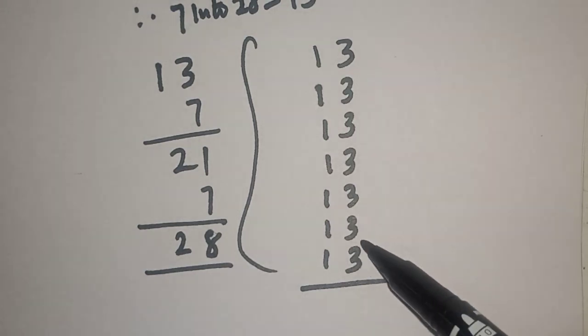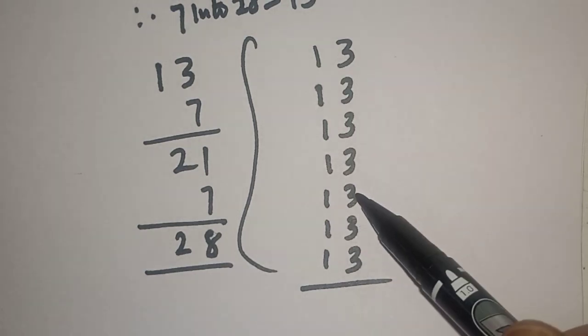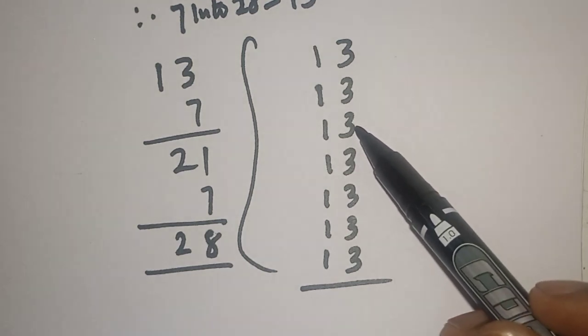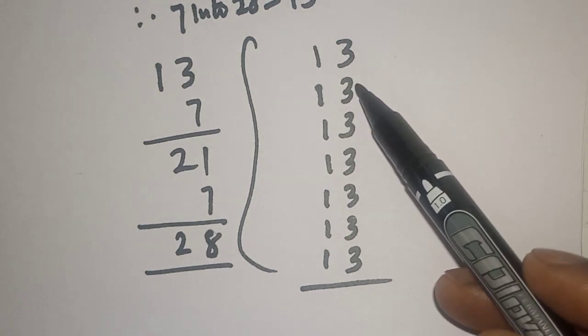This is 3 plus 3 equals 6, plus 3 equals 9, plus 3 equals 12, plus 3 equals 15, plus 3 equals 18, plus 3 equals 21.